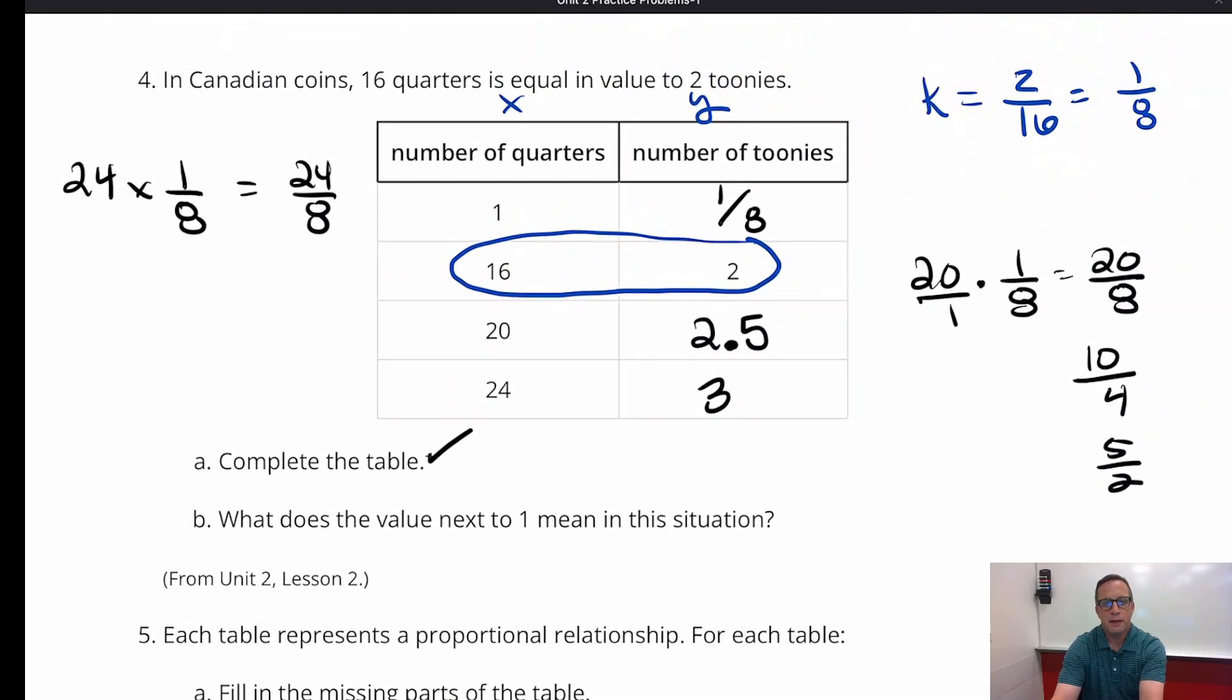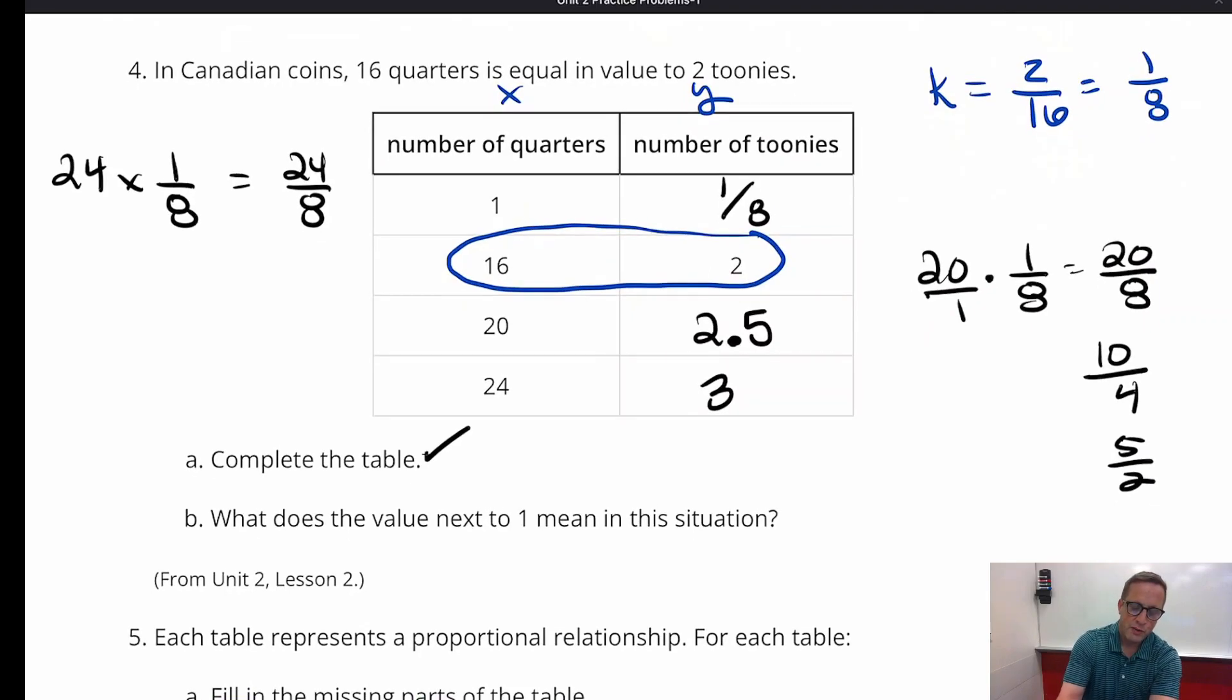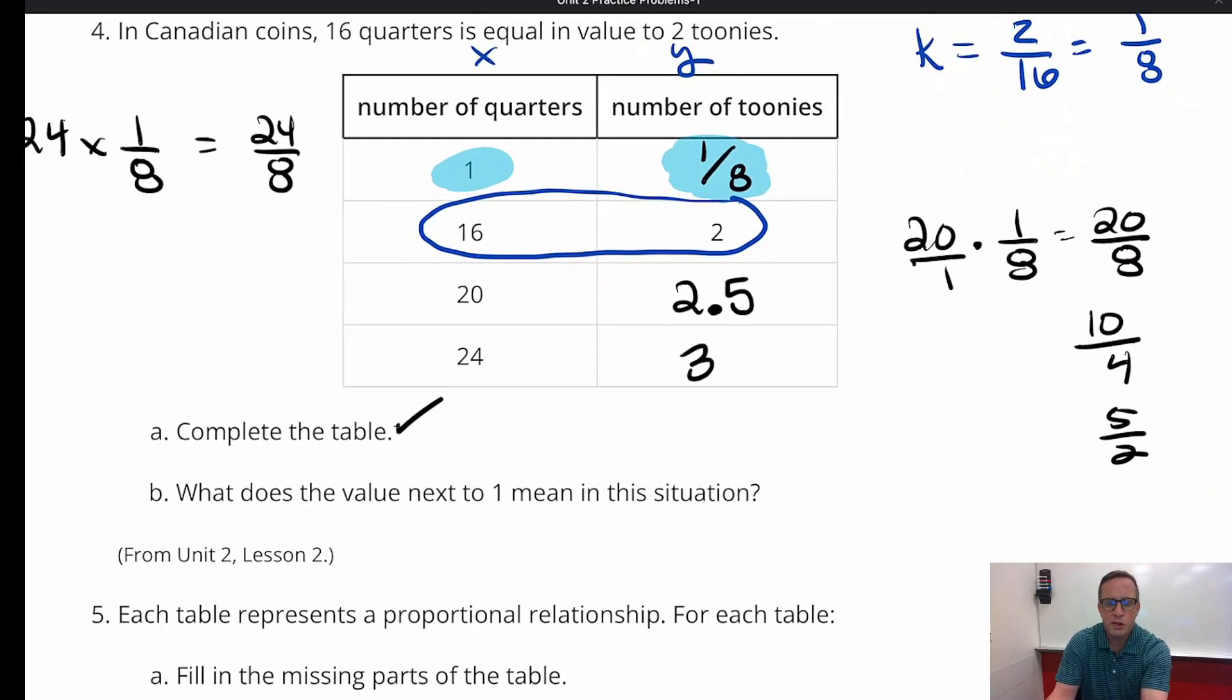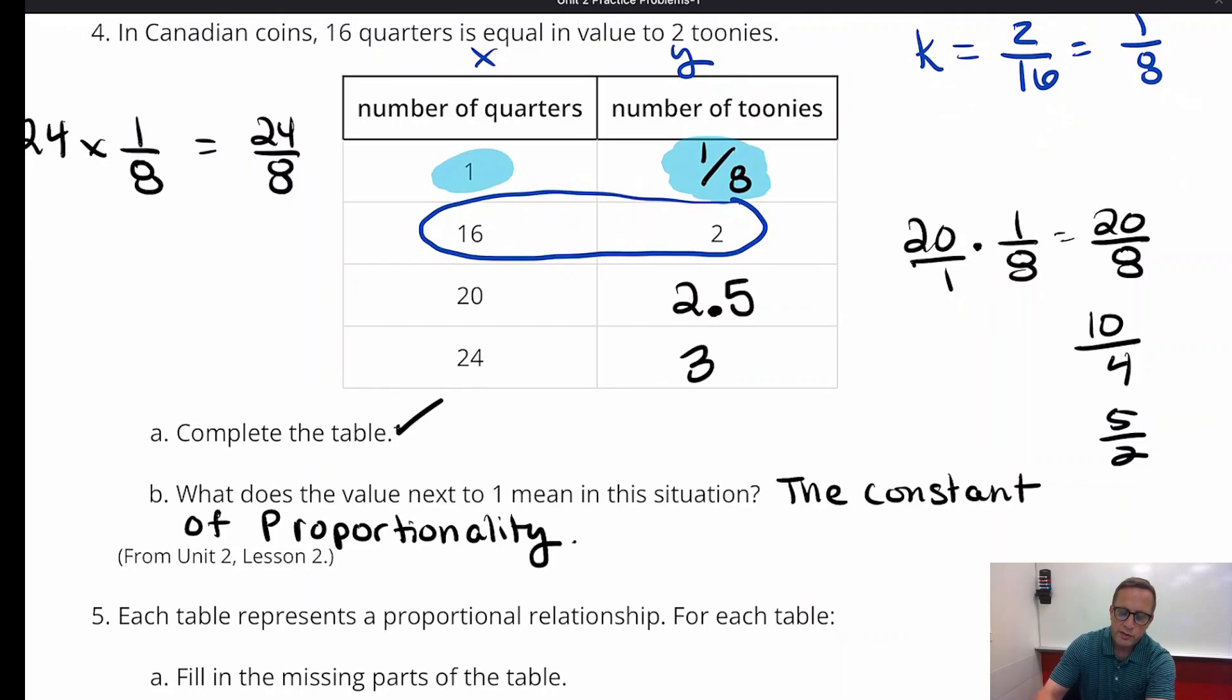Alright, for B, what does the value next to 1 mean in this situation? Well, you know what that means? If you find the 1, you've found the constant of proportionality. Whatever the 1 is for x, there you will find your constant of proportionality, which makes it really easy to figure out what the constant of proportionality is. Not that you probably didn't already know it, but it's 1 eighth. The constant of proportionality. It also means that 1 eighth of a toonie equals 1 quarter. 1 eighth of a toonie represents 1 quarter.